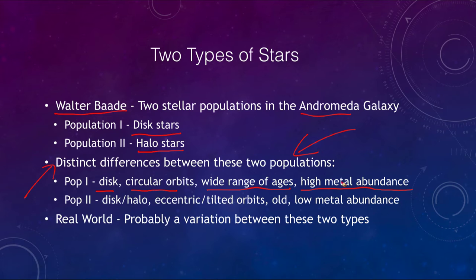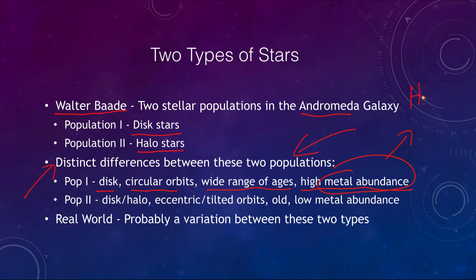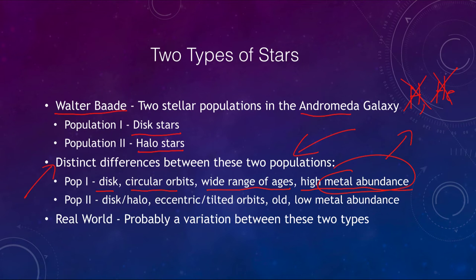I should take a minute here to explain what metal abundance means. To an astronomer, a metal is anything that is not hydrogen or helium. So ignoring hydrogen and helium, any other element is considered a metal — things like carbon, oxygen, and silicon are all metals to an astronomer.